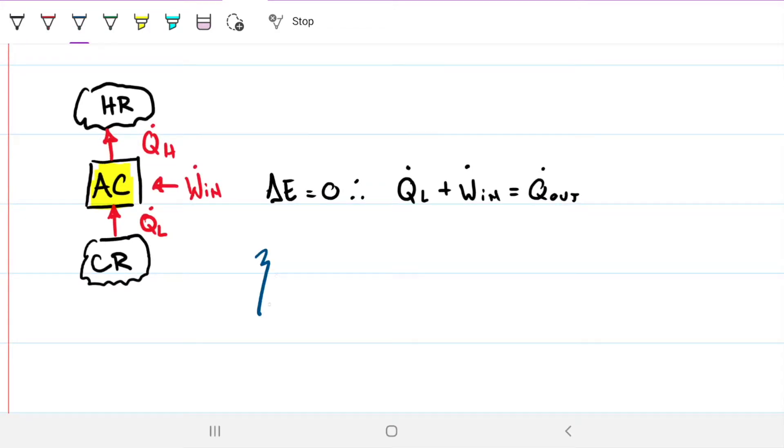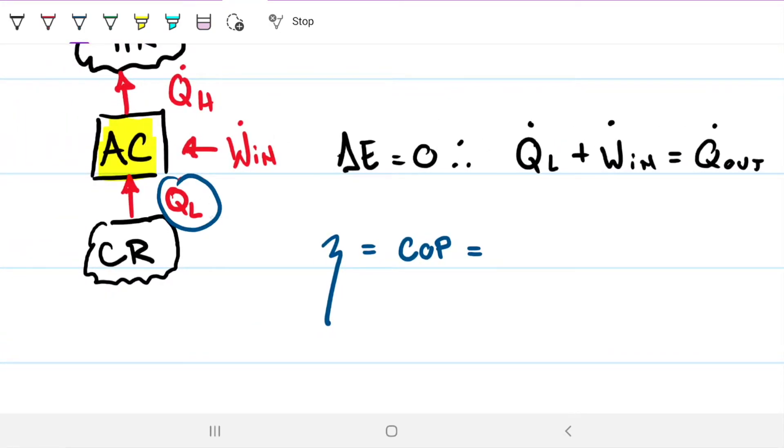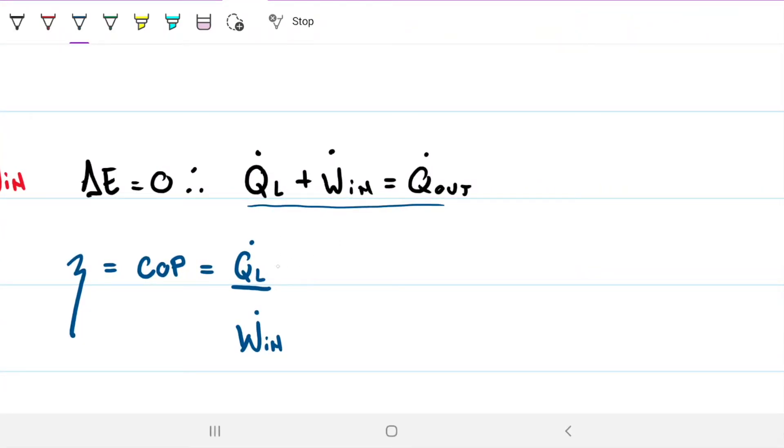The other thing that we need to remember is that the efficiency of the AC that we generally call COP, if you remember its efficiency, it might be easier to always remember it without needing to memorize any equations, is what we want to maximize, what we want to get out of this equipment, divided by what we need to put in. So in this case, we want to maximize Q_L as much as possible. We want to remove as much energy as we can from our house. And what we need to put in is the energy to operate the AC, that is the work. So we can substitute work in by Q_out minus Q_in.